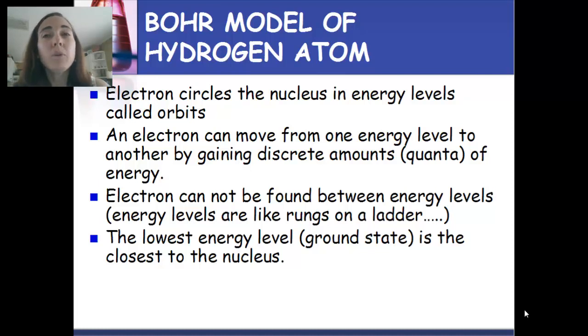With the orbits, the ones that are closest to the nucleus, where n equals 1, are the lowest energy level orbits, and that's called the ground state. The higher the number gets, the further the ring is from the nucleus, the higher energy state that electron would be.